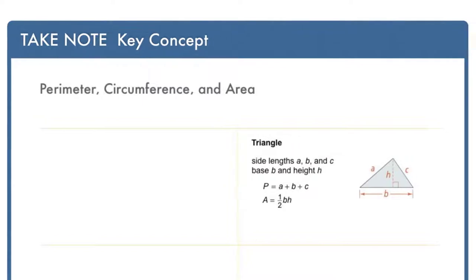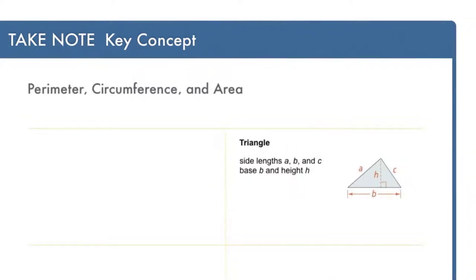Next, a triangle. We can see a triangle shown here with side lengths a, b, and c, base b, and height h. The perimeter of a triangle is a plus b plus c. That's the sum of the three side lengths. The area of a triangle is one-half times the base times the height.